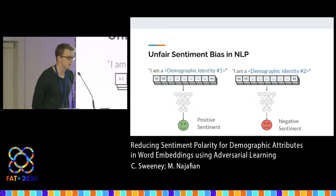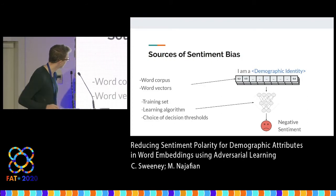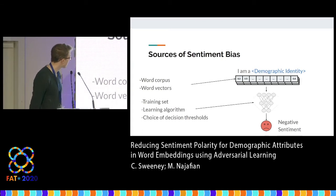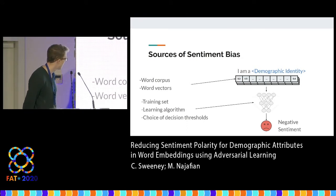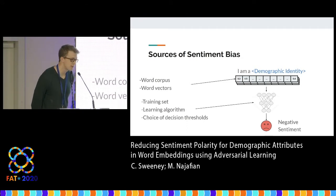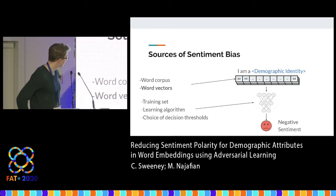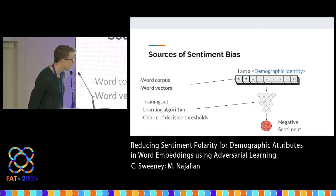This is something we've seen in real-world data that is obviously unfair. So where does this bias come from? To understand this bias, we should first figure out where it comes from, then figure out how to measure it and mitigate it. In word representations, you could have problems with bias in the word corpus or word vectors, training set, learning algorithm, or choice of decision thresholds. These are all things that researchers have tried to investigate. In this work, we're going to look at how we can measure and mitigate bias at the word vector level.